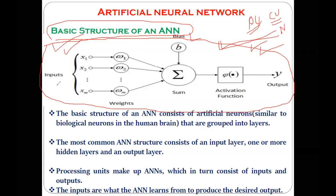You can see there are a number of inputs, a summation function, an activation function, different weights, and an output. These are the different components performing the activities of the different elements present in the biological neuron. You cannot see dendrites or axons here — those are natural elements of the biological neuron. We replicate their activity with the help of different weights, summation function, activation function — these are the different mathematical functions — and with circuits. This is what your artificial neuron looks like.